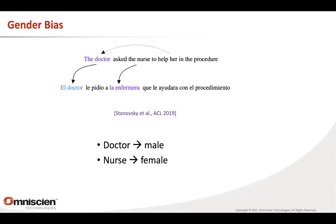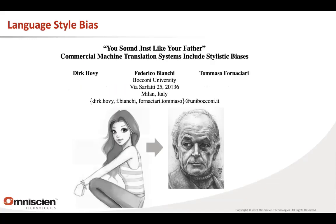These are the biases the model has because they're in the data. The data these models are trained on contains stereotypical uses of language going back over decades. Another interesting bias relates to the kind of text being produced — a lot of training data comes from formal announcements and speakers like politicians who tend to be older, so the model learns a style of text that sounds like 'your father.' If you use this to translate text authored by younger authors, it gets transformed into text that sounds written by an older person.